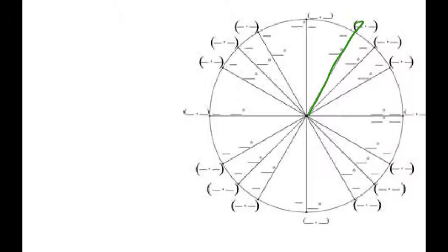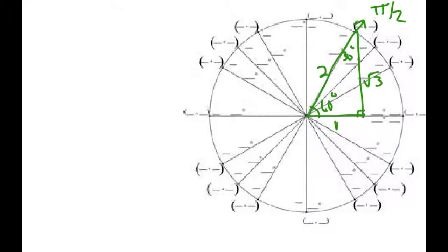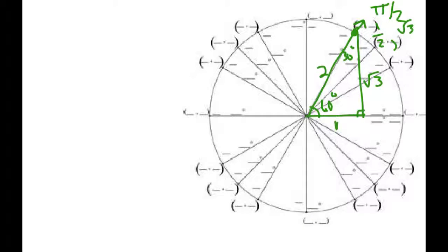Now let's talk about 60 degrees, or pi over 3. If my angle is 60 instead of 30, the side opposite 30 is 1, the side opposite 60 is square root of 3, and the hypotenuse is 2. When I find the ordered pair where that terminal ray hits the unit circle, the cosine of 60 degrees is 1 half, and the sine of 60 degrees is square root of 3 over 2.